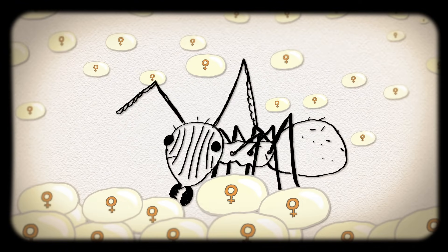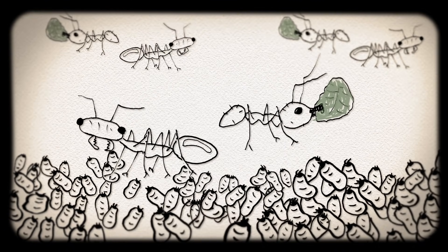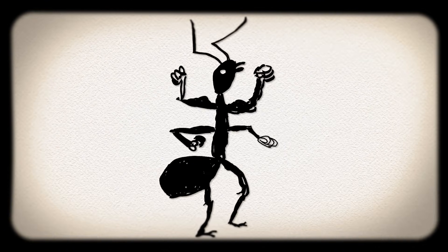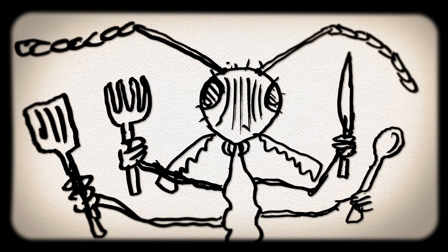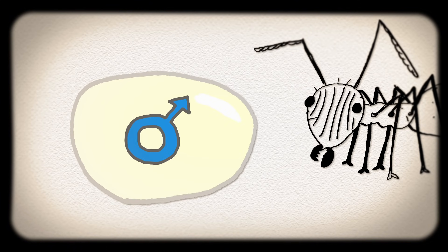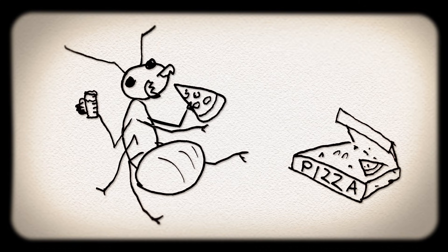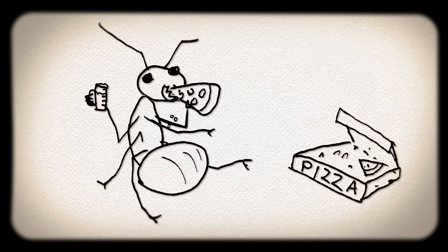Fertilized eggs grow into female workers, who care for the queen and her eggs, build and defend the colony, and forage for food, while unfertilized eggs grow into males, whose only job is to wait until they are ready to leave the nest and reproduce.